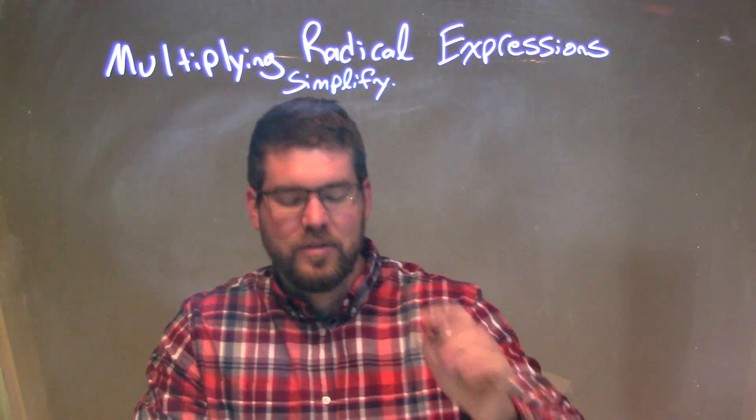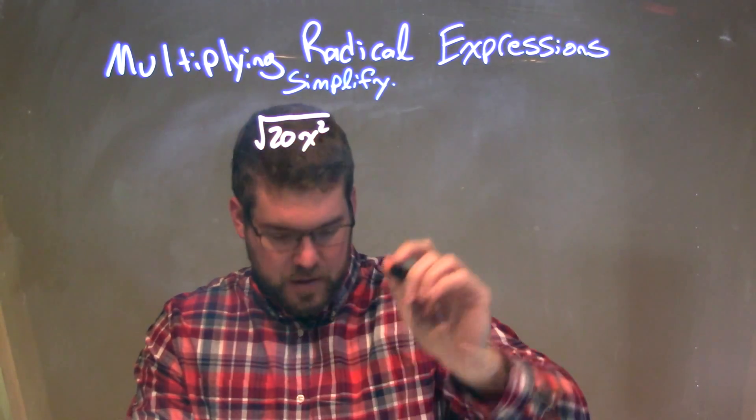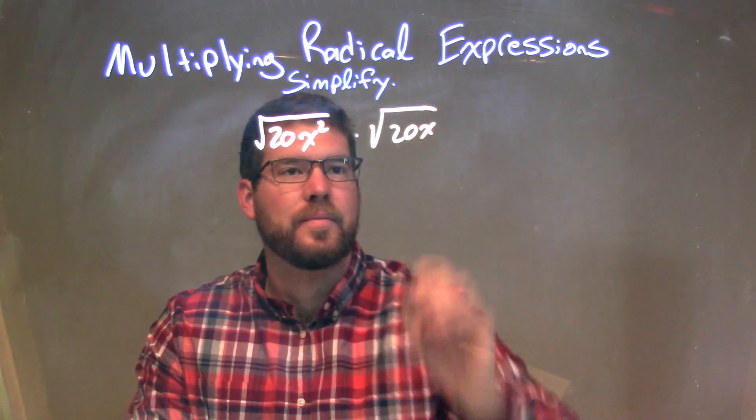So, if I had to simplify this expression, the square root of 20x squared times the square root of 20x, okay?